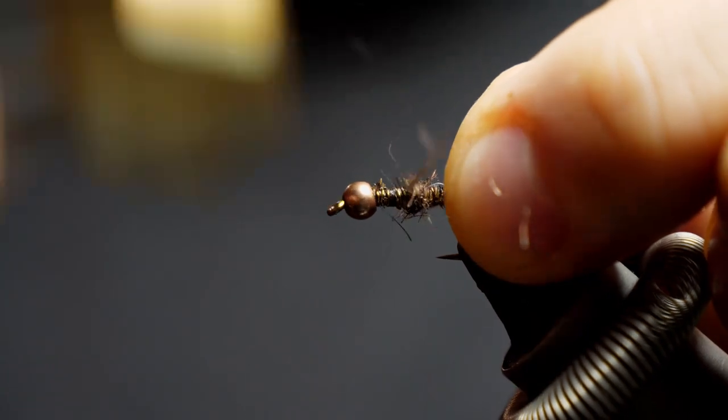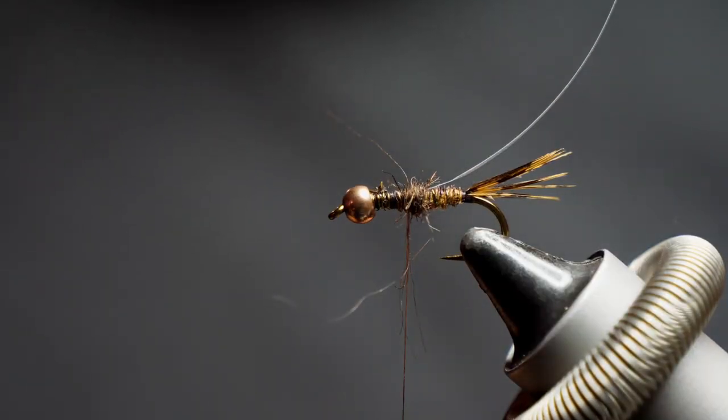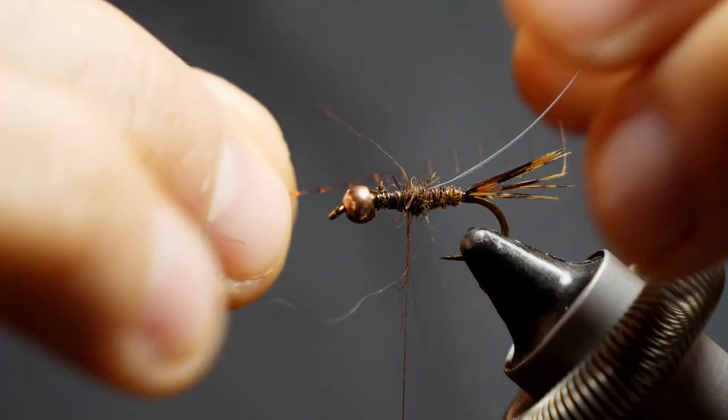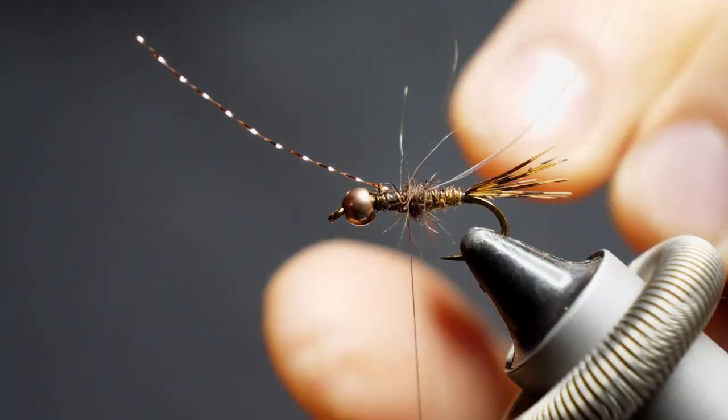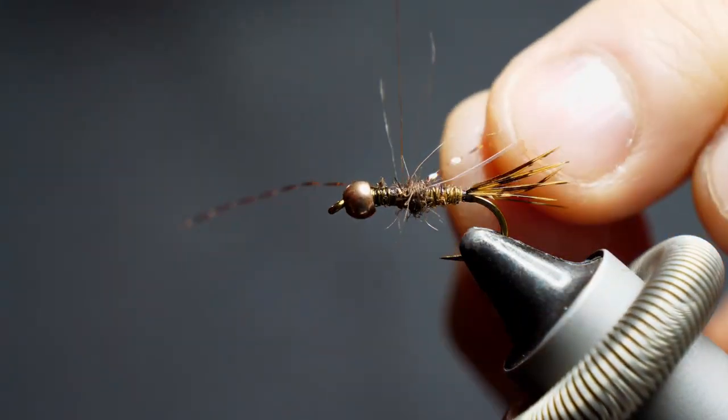Now we're going to put some dubbing, but just a tiny ball here. So I'm going to wrap it down just a couple wraps with that dubbing ball, and that's going to lock down the flashback, but it's also going to help the legs splay out a little bit nicer as well.